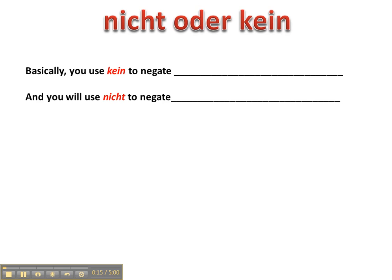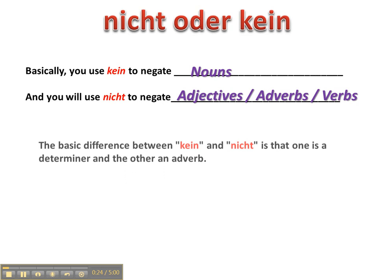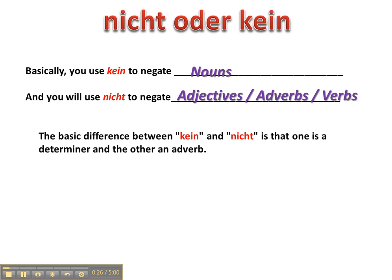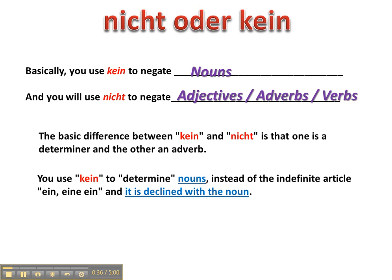Basically, you use Kein to negate nouns and you use Nicht to negate basically everything else — adjectives, adverbs, verbs. The basic difference between Kein and Nicht is that one is a determiner and the other can be classified as an adverb. You use Kein to determine or modify nouns instead of the indefinite article Ein, Einer, or Ein, and it is declined with the noun.